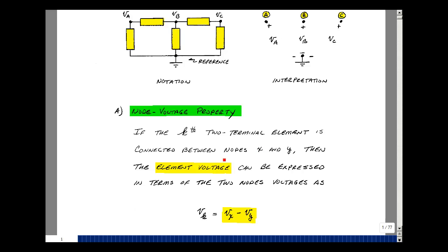If the kth 2 terminal element is connected between two nodes x and y then the element voltage can be expressed in terms of these two node voltages as the difference of x minus y.